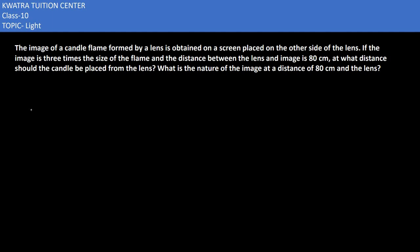The first question is: The image of a candle flame formed by a lens is obtained on a screen placed on the other side of the lens. If the image is three times the size of the flame and the distance between the lens and image is 80 cm, at what distance should the candle be placed from the lens? Here we have magnification of 3 times, and the distance between lens and image, which is V, is given as 80 cm.